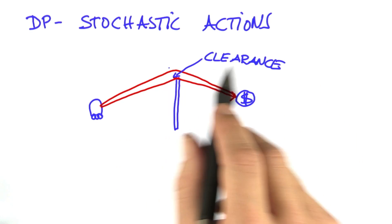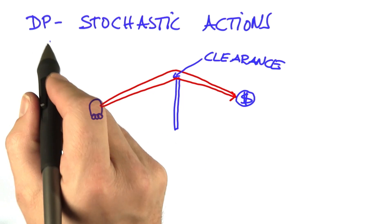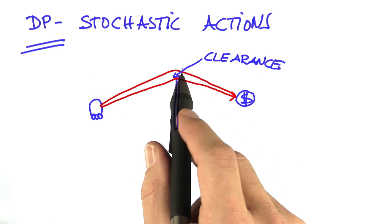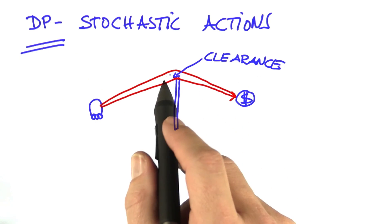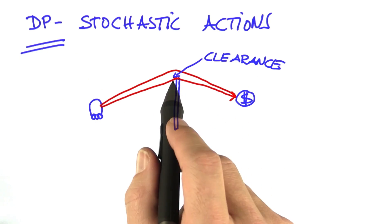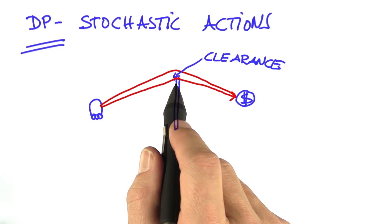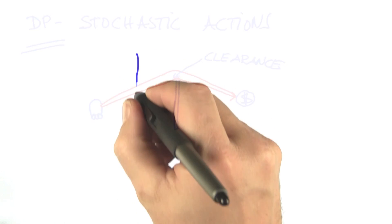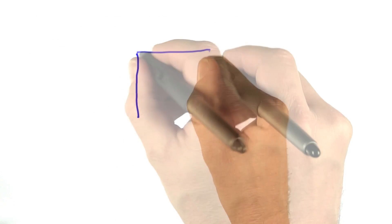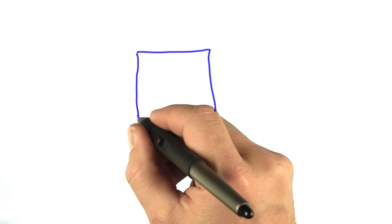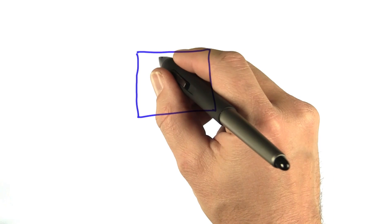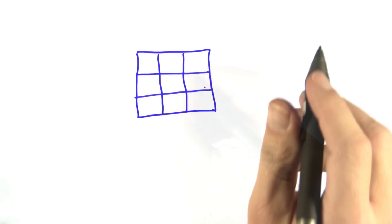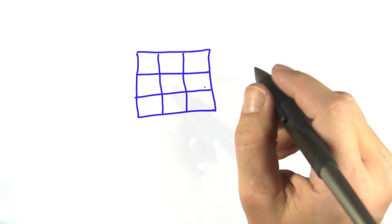We're going to modify our dynamic programming planner to find paths that are a little bit safer and lead a little bit away from obstacles. The way we will do this is we will model actions as stochastic, which we have not done before, but you'll learn how to do it.